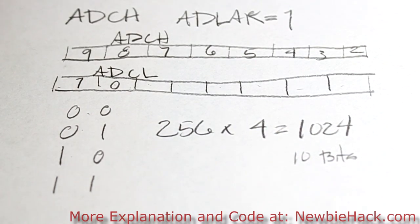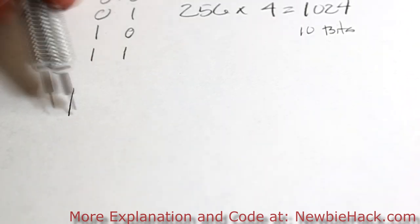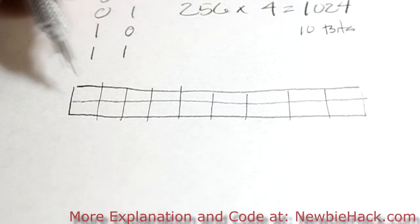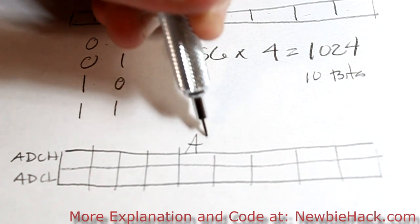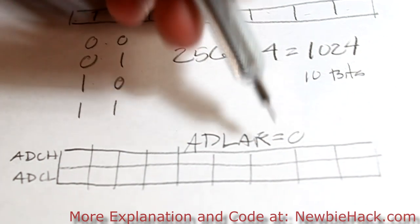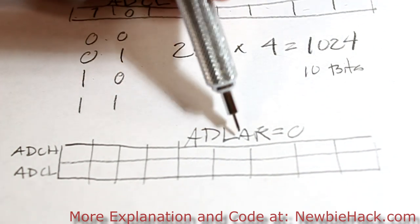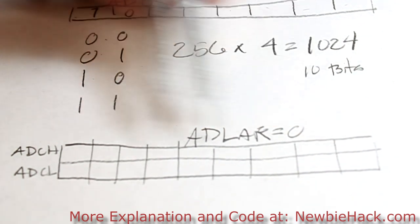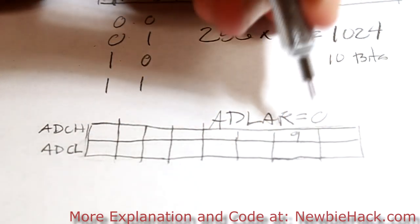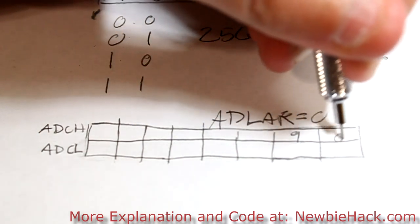Now let's take a look at the right-adjusted ADCH and ADCL. This is with the ADLAR equals to 0. So if ADLAR, or left adjustment, is equal to 0, which means it's adjusted to the right, the 10th position, which is 9, is on the ADCH, the 8th position.